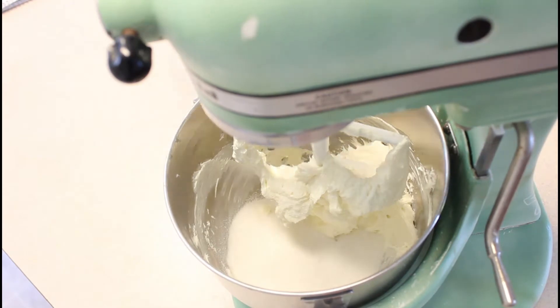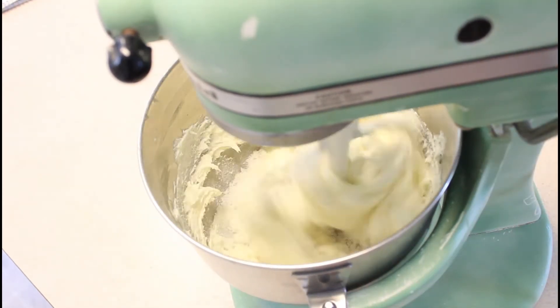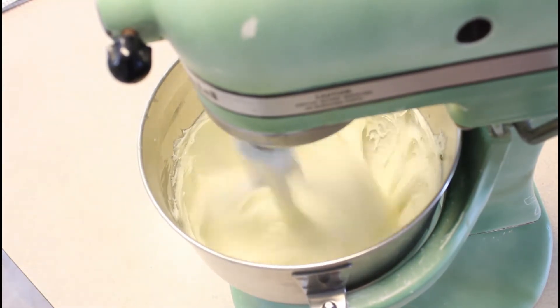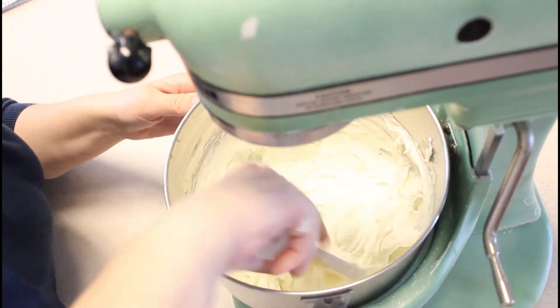Cream those together until the frosting is light and fluffy. I prefer granulated sugar instead of powdered sugar because it whips up fluffier and doesn't have that added cornstarch flavor. It is grainy at first, but it will melt in pretty quickly.